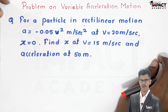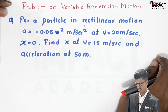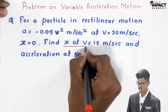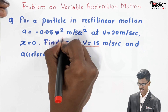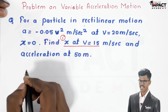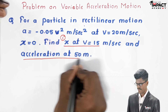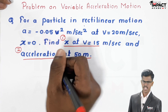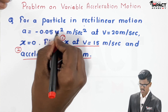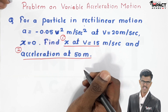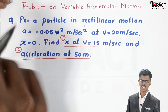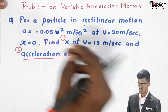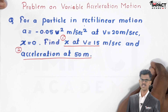In this question, we have to calculate two things. First, find x at v equal to 15 meter per second, and second, acceleration at 50 meters. The acceleration is in terms of v, meaning if the velocity changes, the acceleration of the particle keeps on changing. So it is a variable acceleration motion problem.